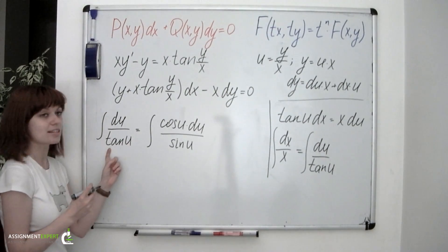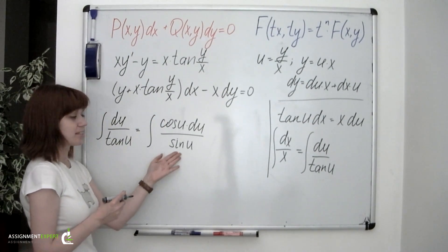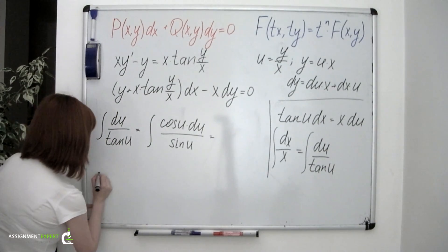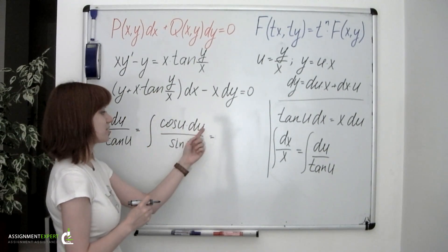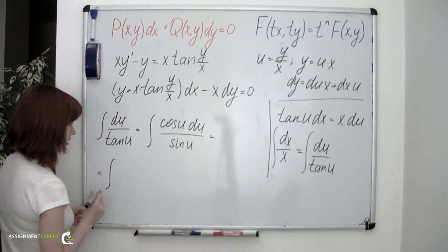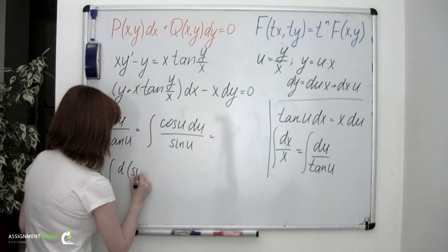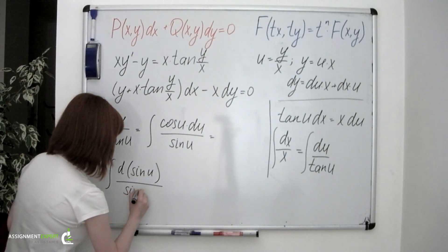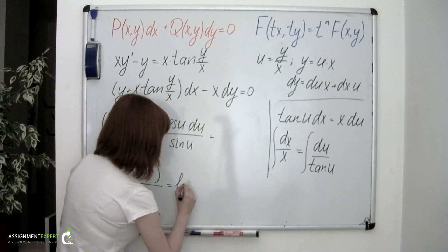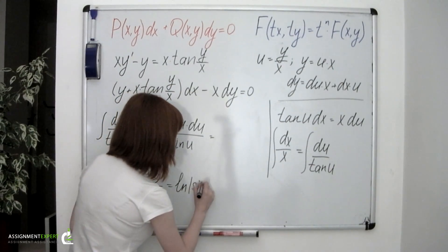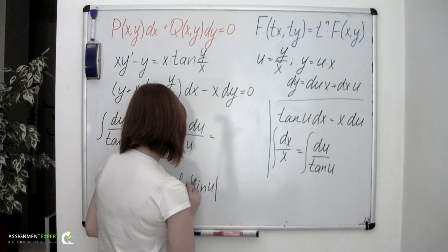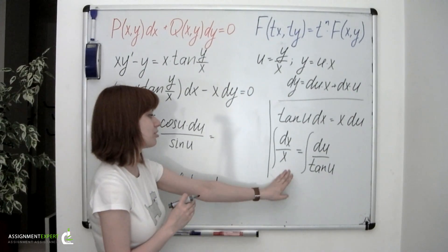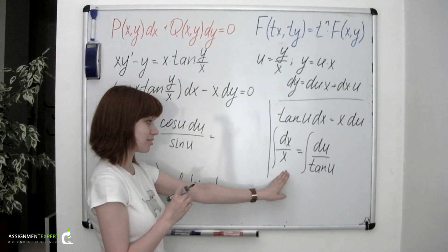We can put the cosine function under the differential of sine, and obtain the integral of d(sine of u) over sine of u, which equals the natural logarithm of the absolute value of sine of u. And we've already discussed that the integral on the left equals the natural logarithm of the absolute value of x.